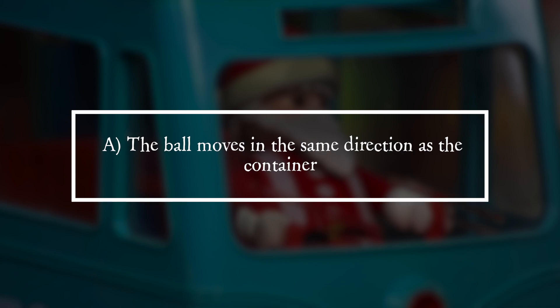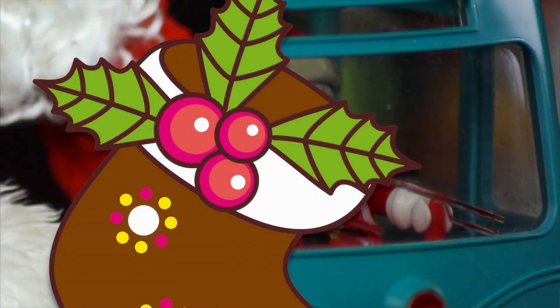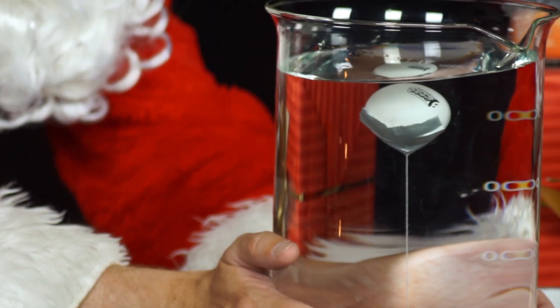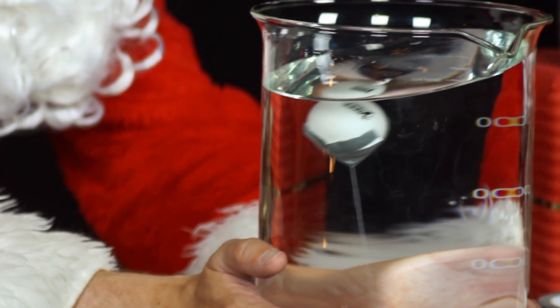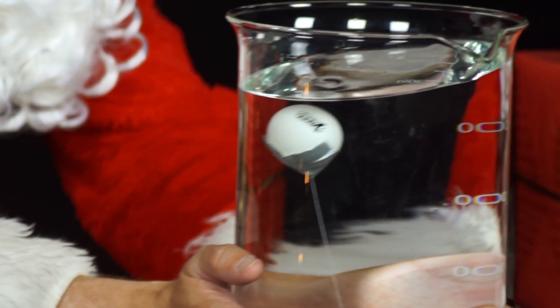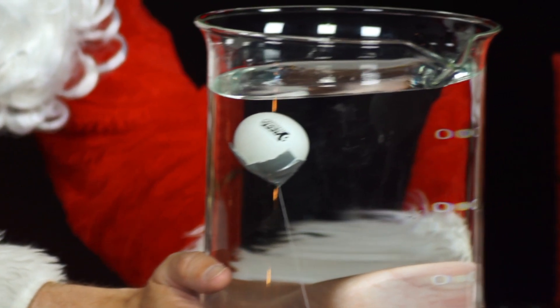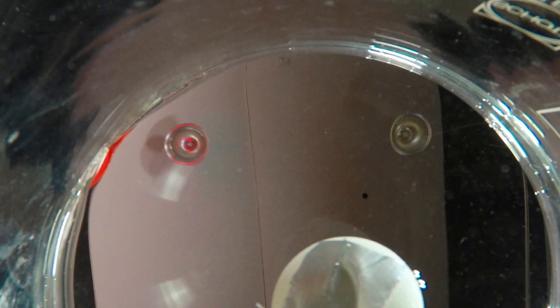Solution. It is answer A. The table tennis ball moves in the same direction as the container at the first moment of movement. Due to the inertia of the water, more water collects on the opposite side of the container to the movement.